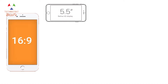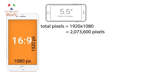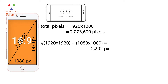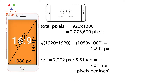How do we calculate PPI? Let's calculate for the iPhone 6s Plus. The screen size is 5.5 inches, the aspect ratio is 16:9, and it has a Full HD screen with 1080 horizontal pixels and 1920 vertical pixels. The total pixels are 1920 × 1080 = 2,073,600 pixels. To find the diagonal pixel count, we use the Pythagorean theorem: the square root of (1920² + 1080²) equals 2,202 pixels diagonally. Dividing by 5.5 inches gives the PPI.